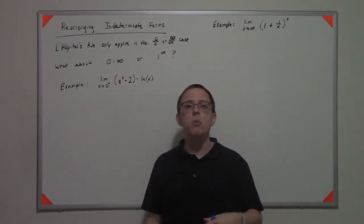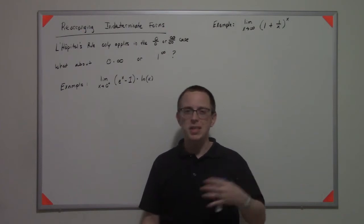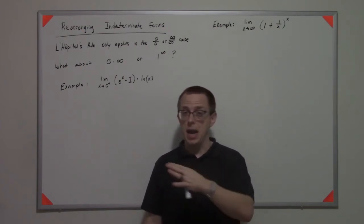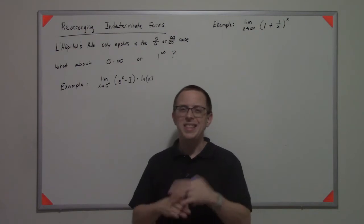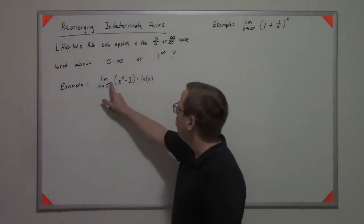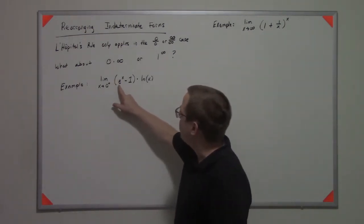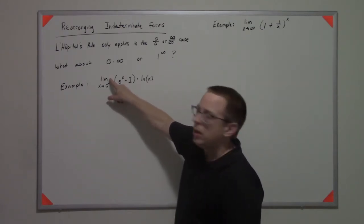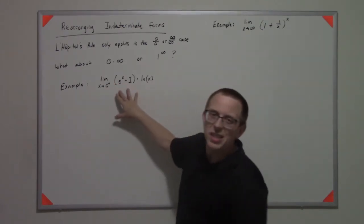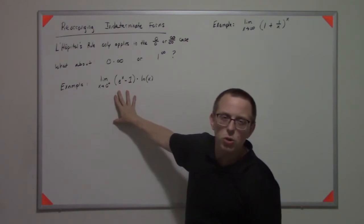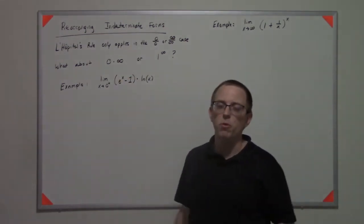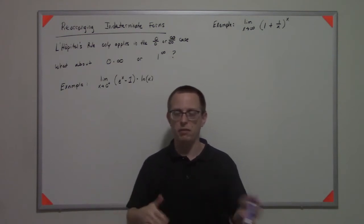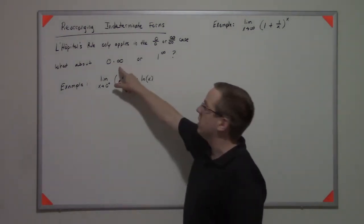I wanted to point this out because 0 times negative infinity is really the same indeterminate case. If you just have a negative on the outside, it's the same type of thing — it would be basically the same structure of the limit. So don't get hung up on whether it's positive infinity or negative infinity; it doesn't matter in terms of this.